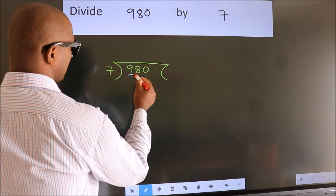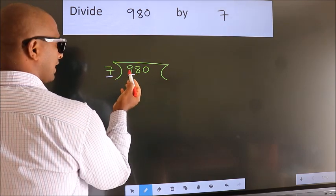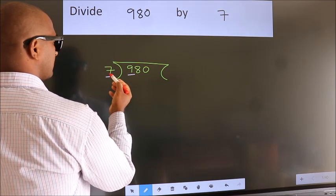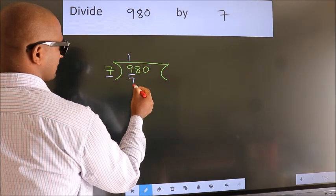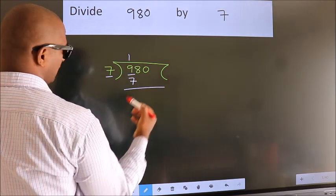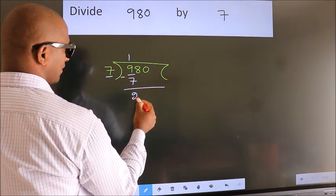Here we have 9. Here 7. A number close to 9 in the 7 table is 7 once, which is 7. Now we subtract. We get 2.